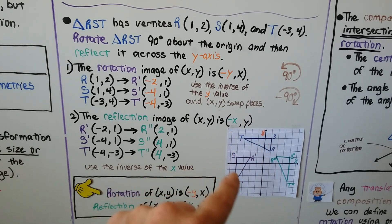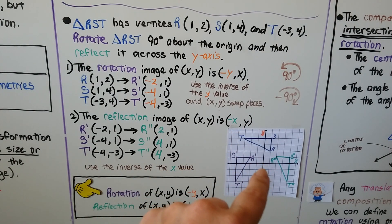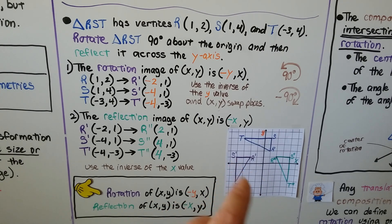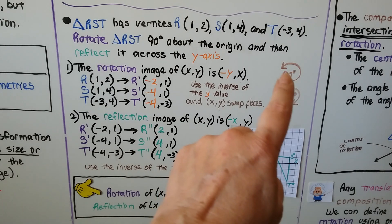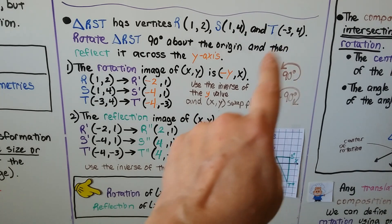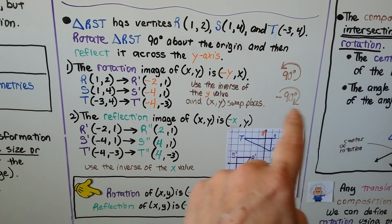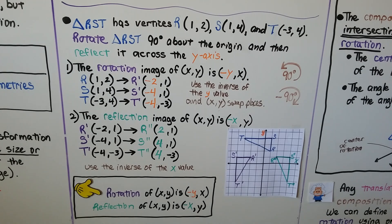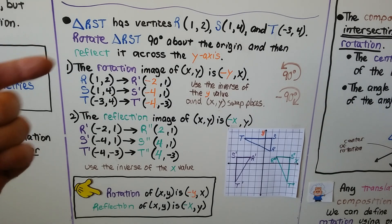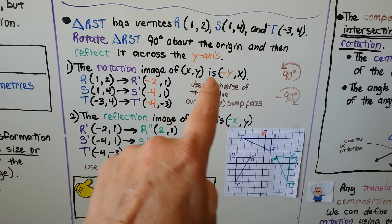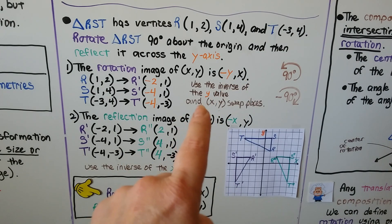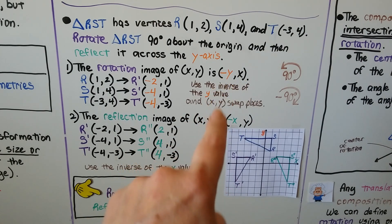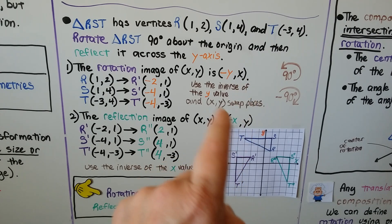We're going to rotate 90 degrees — positive 90 degrees, which is counter-clockwise — about the origin at (0, 0), and then reflect it across the y-axis. Positive 90 is counter-clockwise; negative 90 is clockwise. The rotation image of (x, y) is (−y, x): we use the inverse of the y value, then the x value.